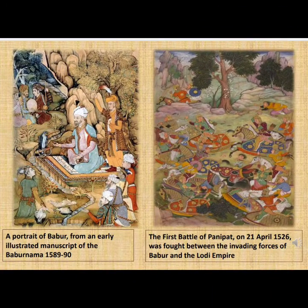A portrait of Babar from an early illustrated manuscript of Babur Nama from 1589–90. The First Battle of Panipat was on 21 April 1526, fought between the invading forces of Babar and the Lodhi Empire. The Battle of Khanwa was fought near the village of Khanwa, about 60 km west of Agra, on 17 March 1527. It was the second battle fought in modern-day India by the first Mughal Emperor Babar, after the Battle of Panipat.